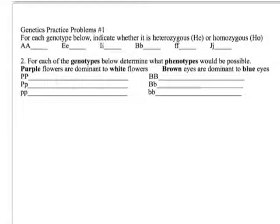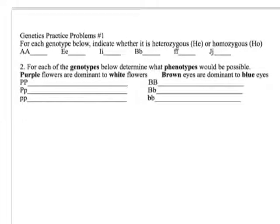Heterozygous means something that has both a dominant and a recessive trait. Usually the dominant trait is what you see. Uppercase A, uppercase A is homozygous. Uppercase E, lowercase e is heterozygous because it has upper and lower — it has two genes for the same trait, called an allele, and one is going to express itself.